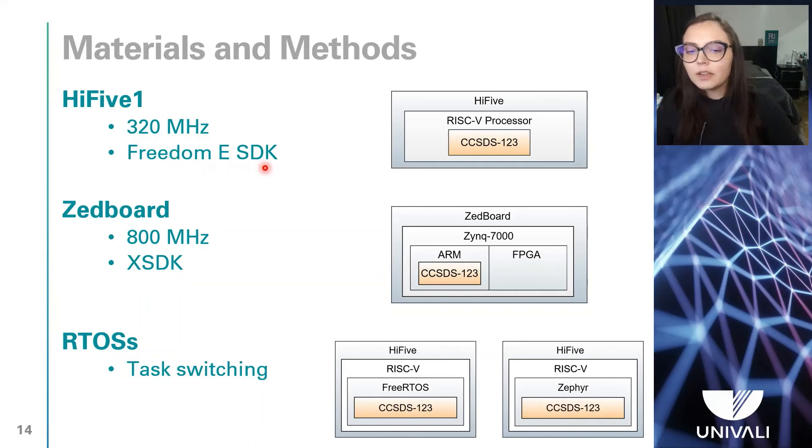The Zedboard has a Zynq 7000 system on chip that integrates the FPGA area and a hard ARM Cortex-A9 processor with 32 KB instruction cache and 32 KB data cache.